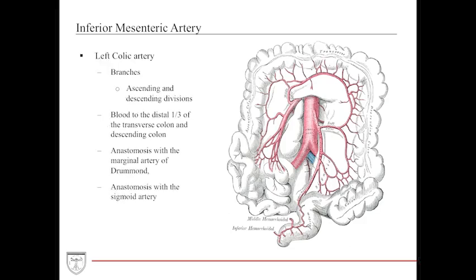The left colic artery branches into ascending and descending divisions. The ascending reaches up into the splenic flexure, while the descending portion provides blood to the lower descending colon and almost into the sigmoid. It provides blood to the distal one-third of the transverse colon and descending colon, and contributes to the marginal artery of Drummond anastomosis.